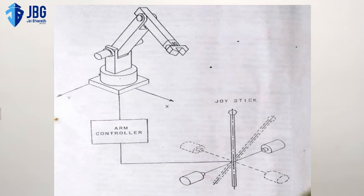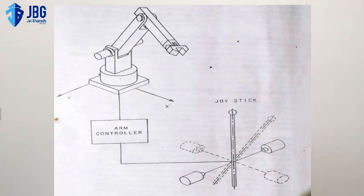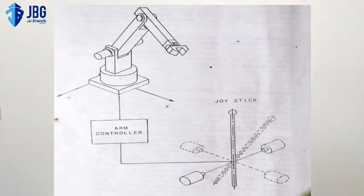By the use of master-slave robots, you can also teach a robot. The slave is a small-size robot which we can place over the work area. We can teach the slave robot, record the particular joint and prismatic joint positions, then play back to the master robot, which is similar in operation or shape but very large in size. By the use of master-slave robots we can also teach the robot easily.